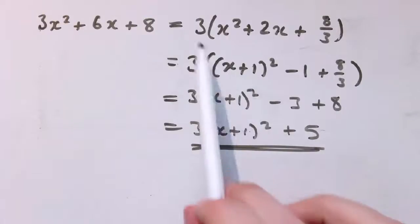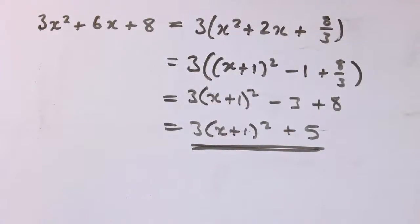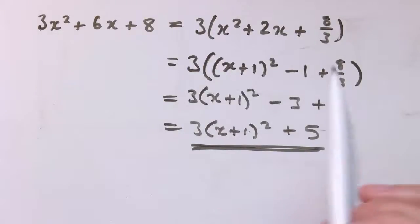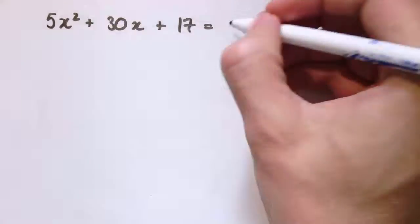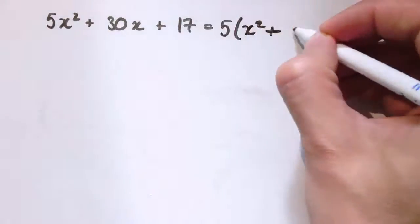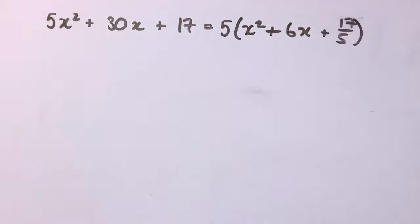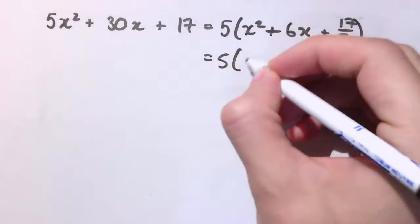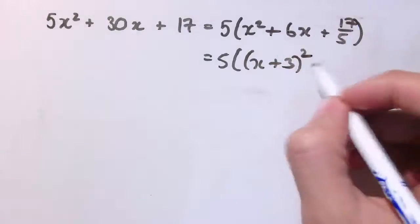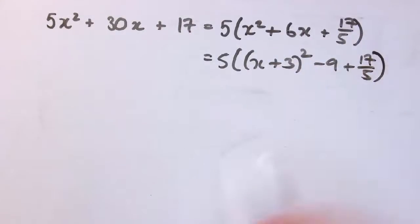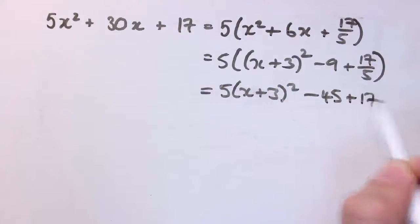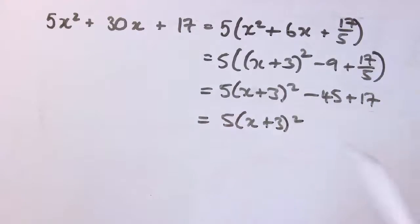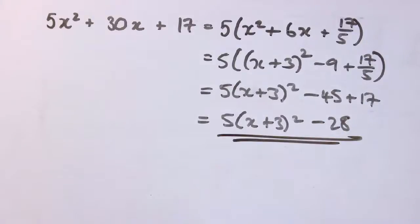By just pulling out that factor of 3 we can work with the rest of the function. There was a slightly messy point when we had 8 thirds inside, but we multiplied by the 3 again anyway. Sometimes you do get messy fractions but it turns out not to be too bad. Here's another one — it's 5x squared this time. Pulling out 5 gives 5 times x squared plus 6x plus 17 over 5. Completing the square inside: half of 6 is 3, so x plus 3 squared, subtract 9, add 17 over 5. Multiplying out gives 5 times x plus 3 squared minus 28.